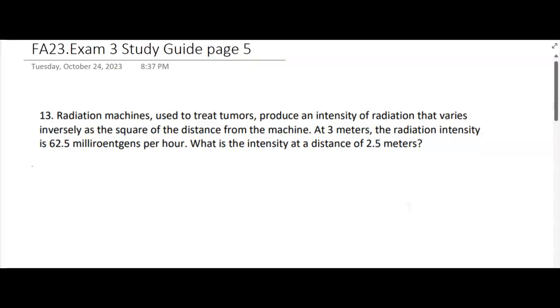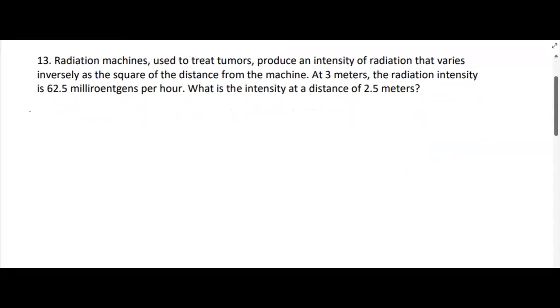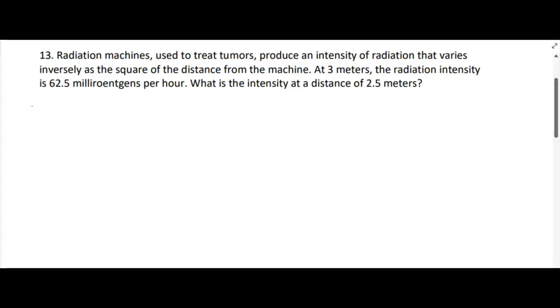Okay, we're on page five. Number 13 here is another variation problem. Radiation machines used to treat tumors produce an intensity of radiation that varies inversely. So we've got intensity, I'm going to use a capital I for intensity, and I'm going to have a K but it'll be over something.